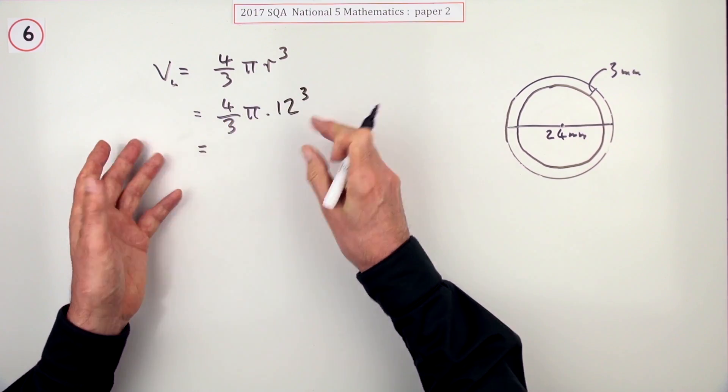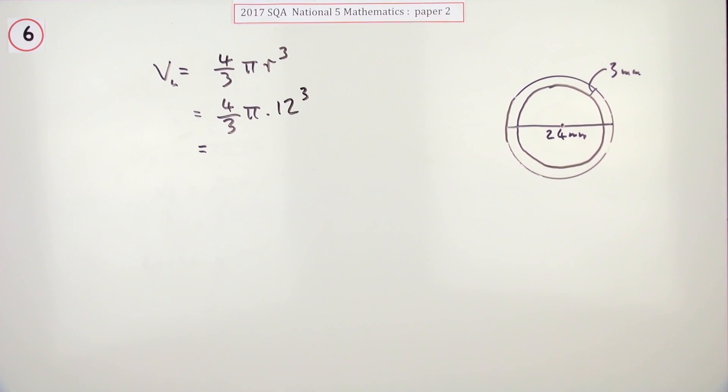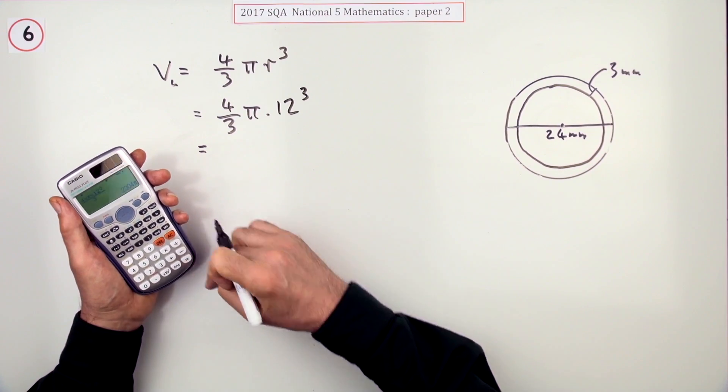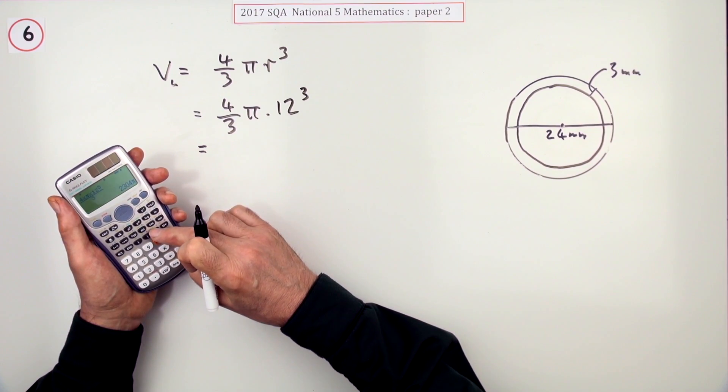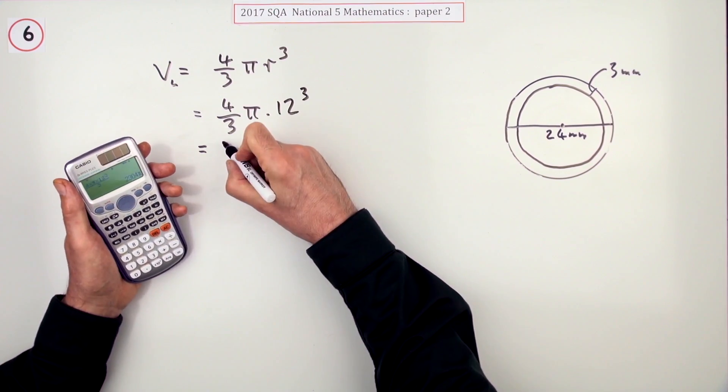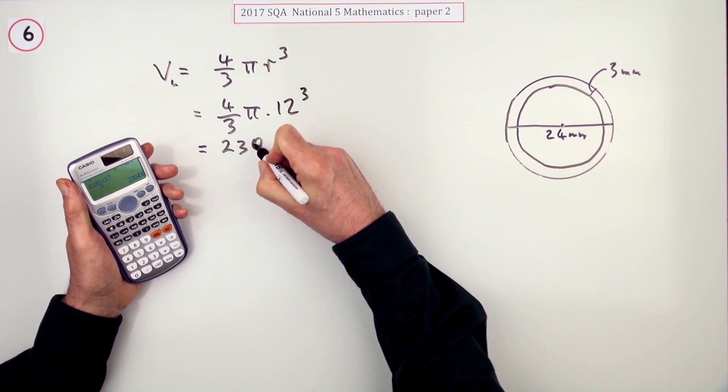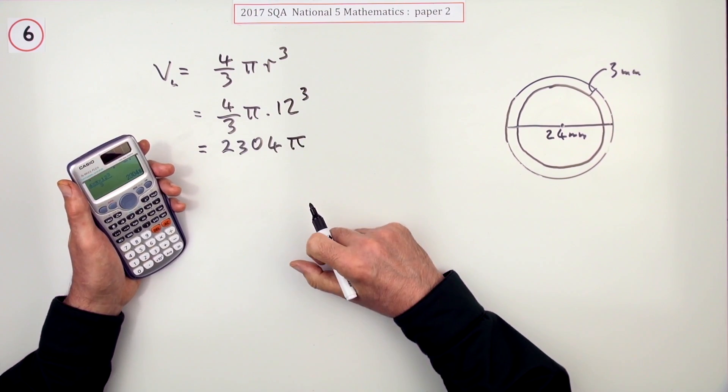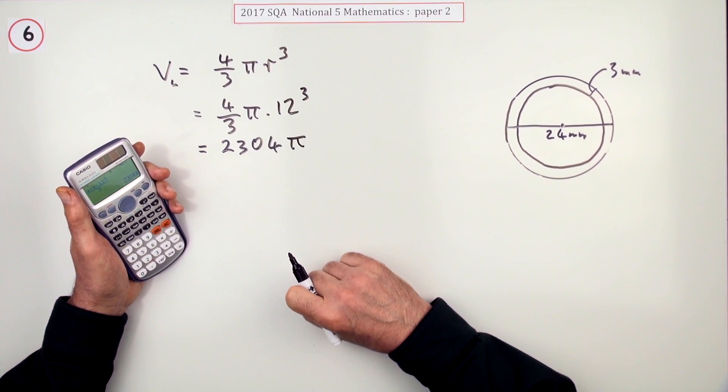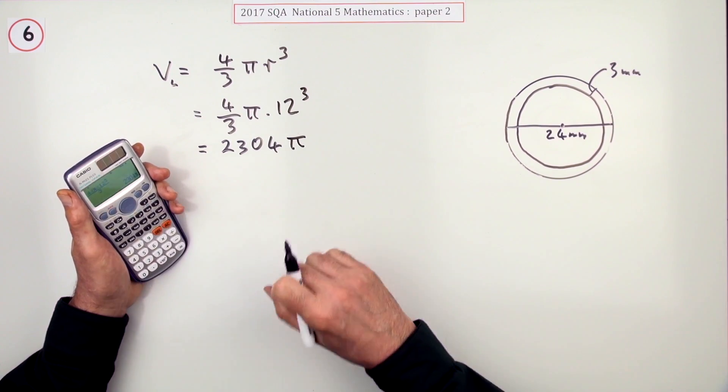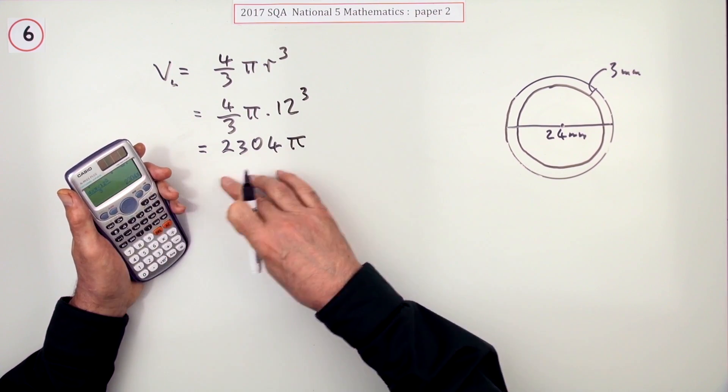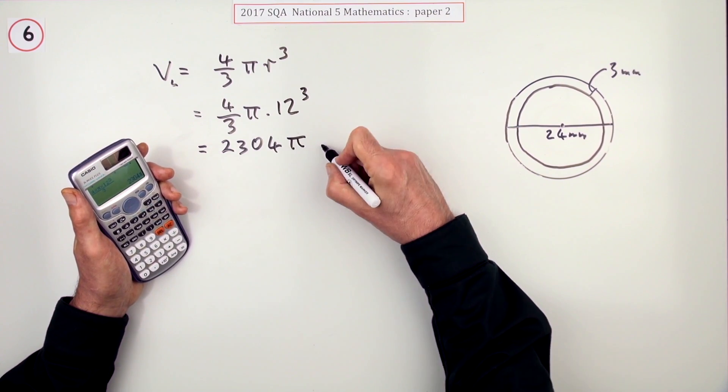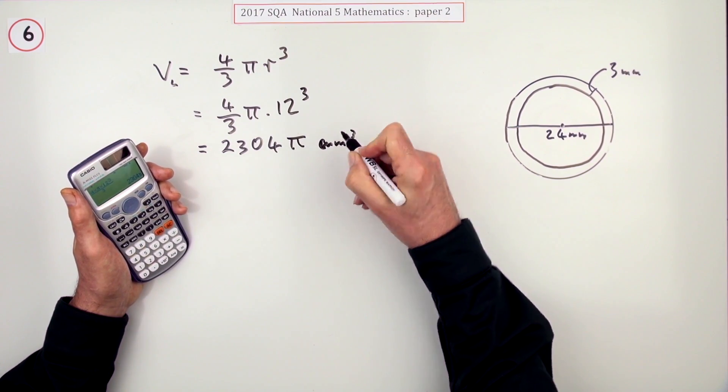So you just type that in and press the button. It could just leave it like that as 2304π because it didn't ask for any intermediate answers. The advantage of leaving it like that is it's completely accurate just now. I think I'll leave it like that, millimeters cubed.